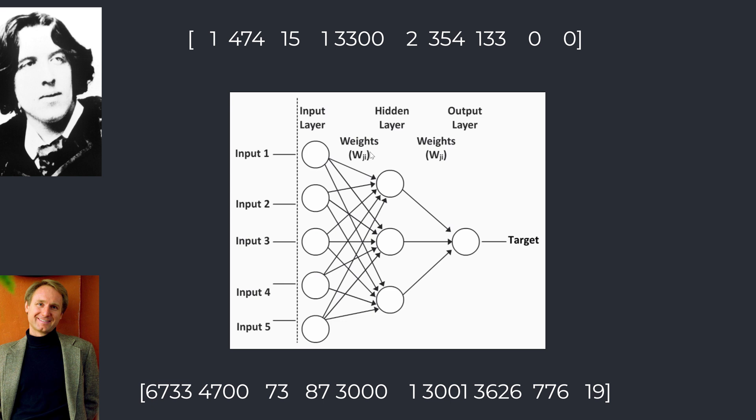Now what is occurring here is that we are going to feed all of these pieces of information into our neural network. Now with each one of these sentences we already know if it is Dan Brown or if it is Oscar Wilde.